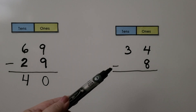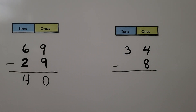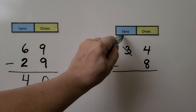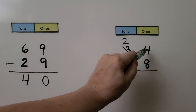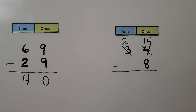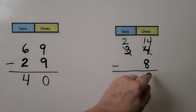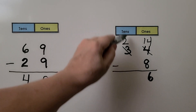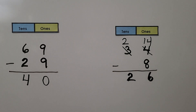Here we have 34 minus 8. Look at the ones place — we need to regroup. We have 4 ones and we need to take 8 away. We cross off the 3 and make it a 2, and we give 10 ones to the ones place. Now instead of 4 ones we have 14 ones. 14 ones minus 8 ones is 6 ones. We're only taking away the 8 ones, so we just bring down the 2. 34 minus 8 is equal to 26.